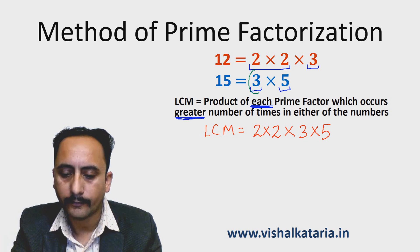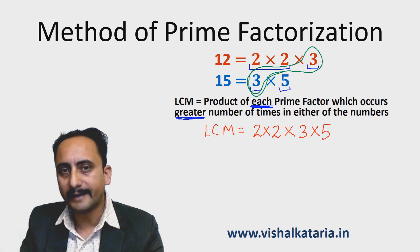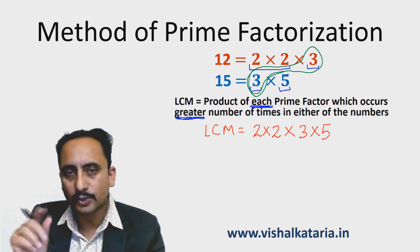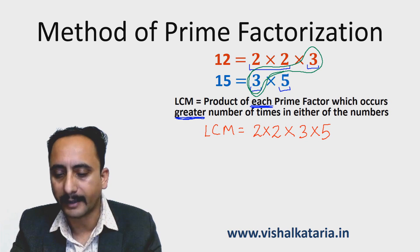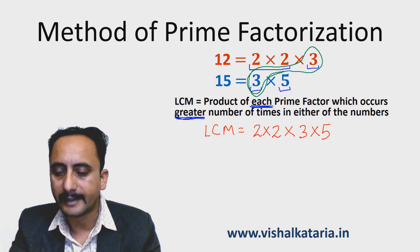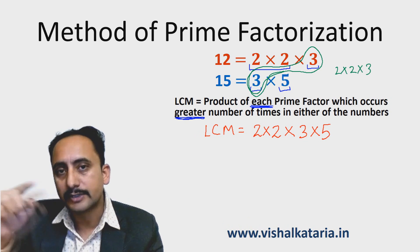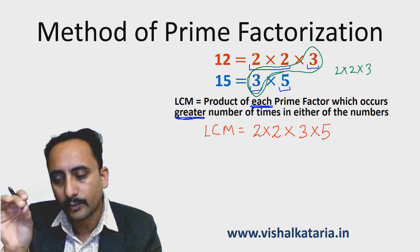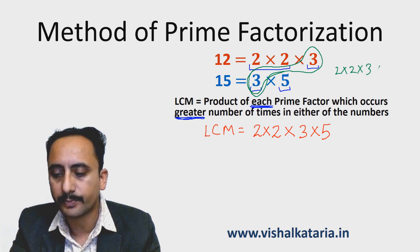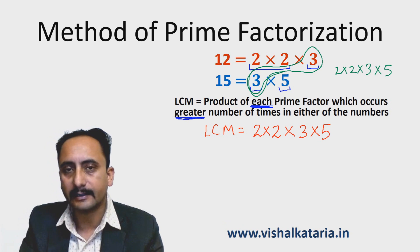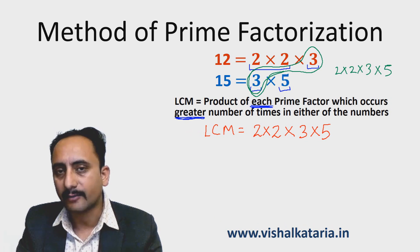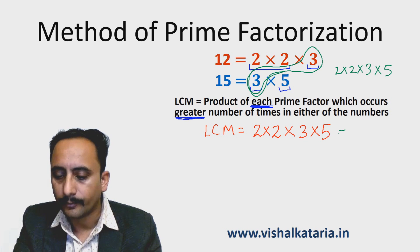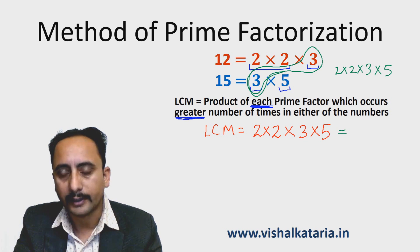Another way to find the LCM is to circle the common prime factors. The common prime factor here is 3. The pair is written only once, and the rest of the prime factors are written as well. So the LCM will be 2 × 2 × 3 (written only once, because it's a common prime factor) × 5 (the remaining prime factor). The answer in both cases is 60.